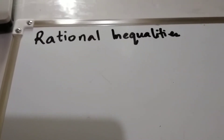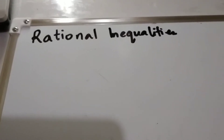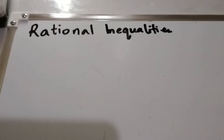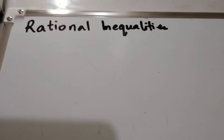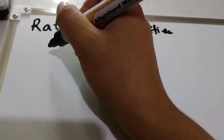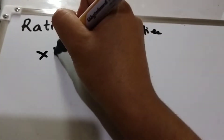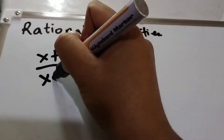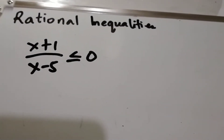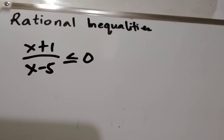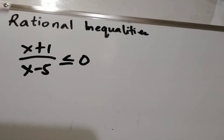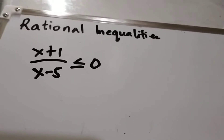Today I will be teaching you about rational inequalities, or how to solve rational inequalities. We are going to find the possible values of x given rational inequalities. Suppose we have this example: x plus 1 over x minus 5 is less than or equal to 0. What you are going to do is write the inequality in general form. As you can see, it is already in general form. Let's proceed to solve or simplify this rational inequality.